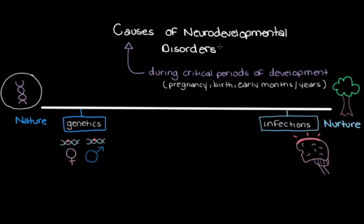That's why we call them neurodevelopmental disorders — because when these events occur during these critical periods of development, they disrupt development in some way. For me, I had meningitis around my mid-twenties, so I'd passed these critical periods of development, and my meningitis didn't result in a neurodevelopmental disorder. Let's keep this question in the back of our minds because we're going to look at it again when we talk more about the word 'cause.'